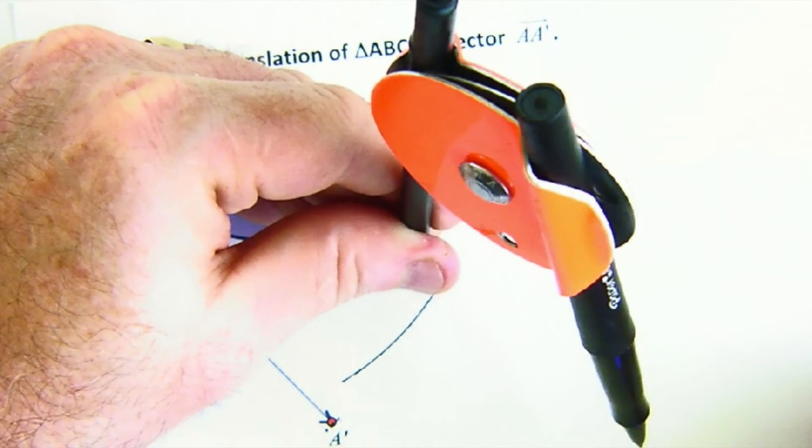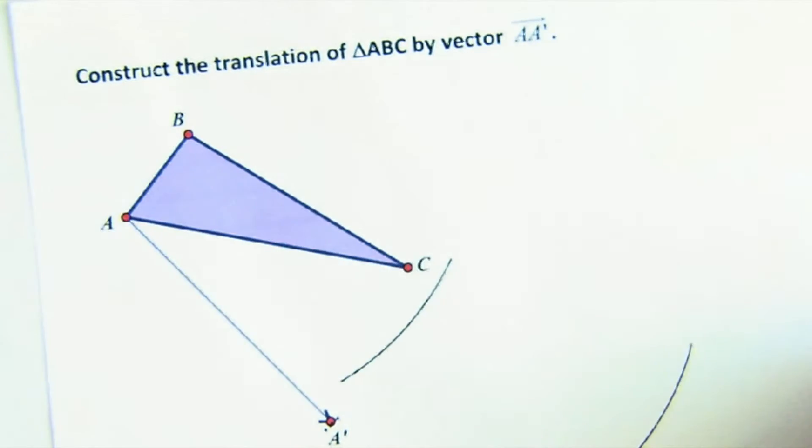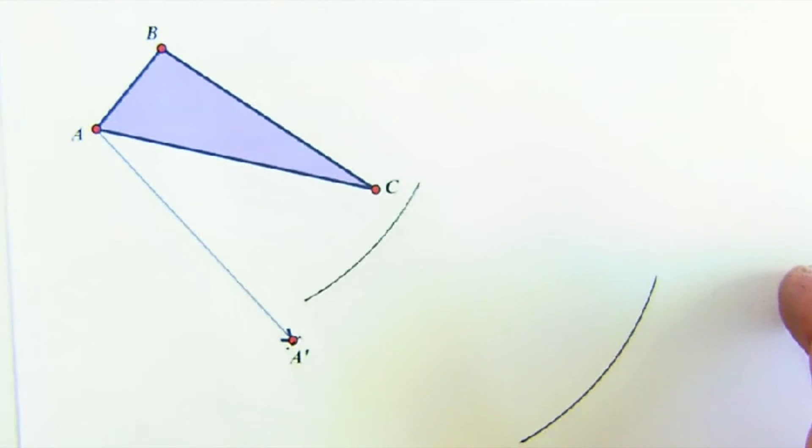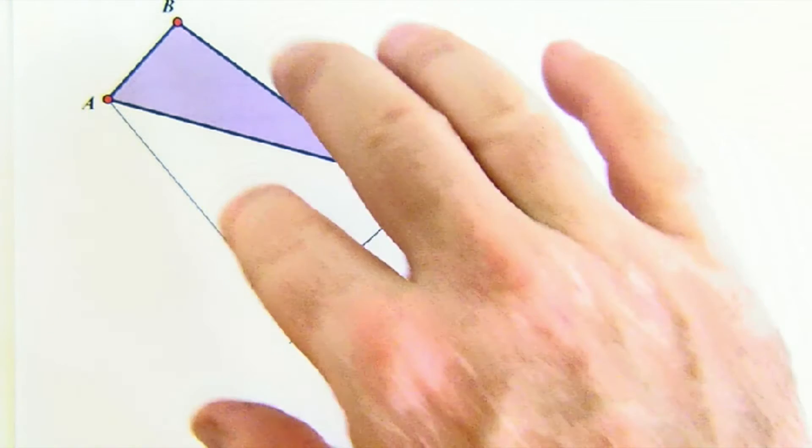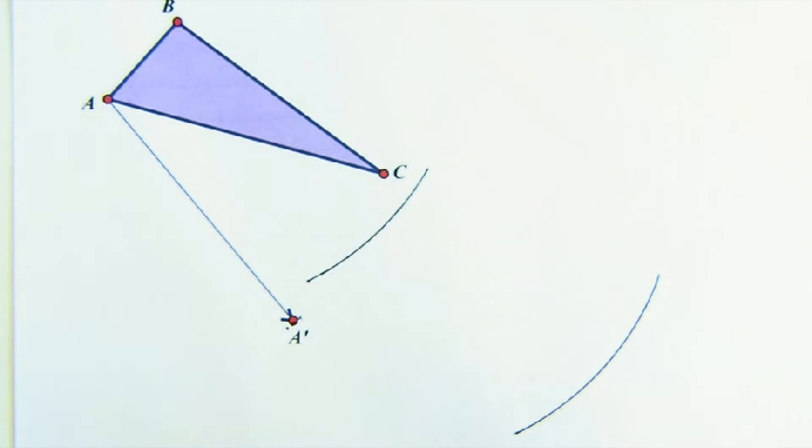And C's got to come down that same distance and in the same direction. I don't know exactly where it will land, but I know it's got to slide this way. So these two arcs represent the distances.